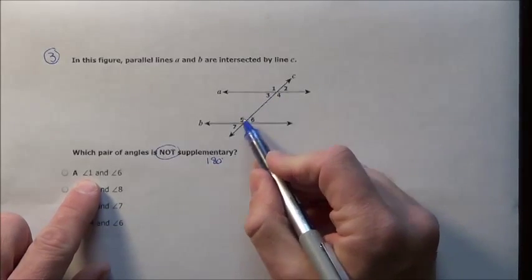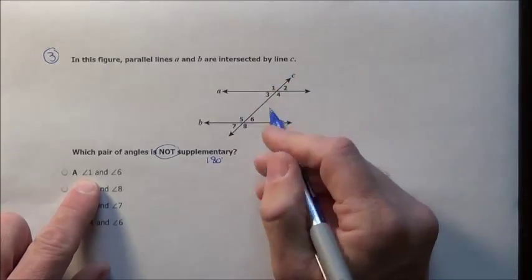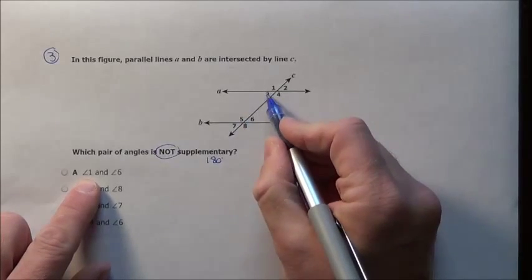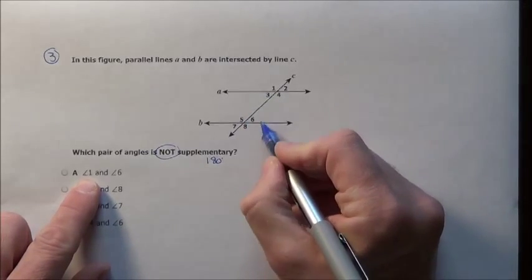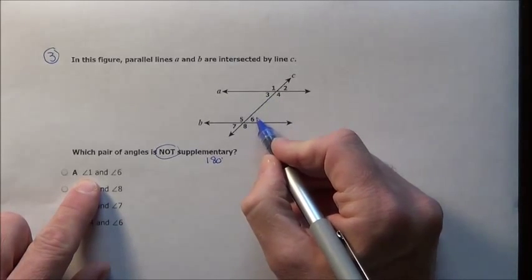We also know angles on the inside of the parallel lines on the same side add up to 180. But if they're on opposite sides - what we call the Z-meister - those angles are equal to one another.